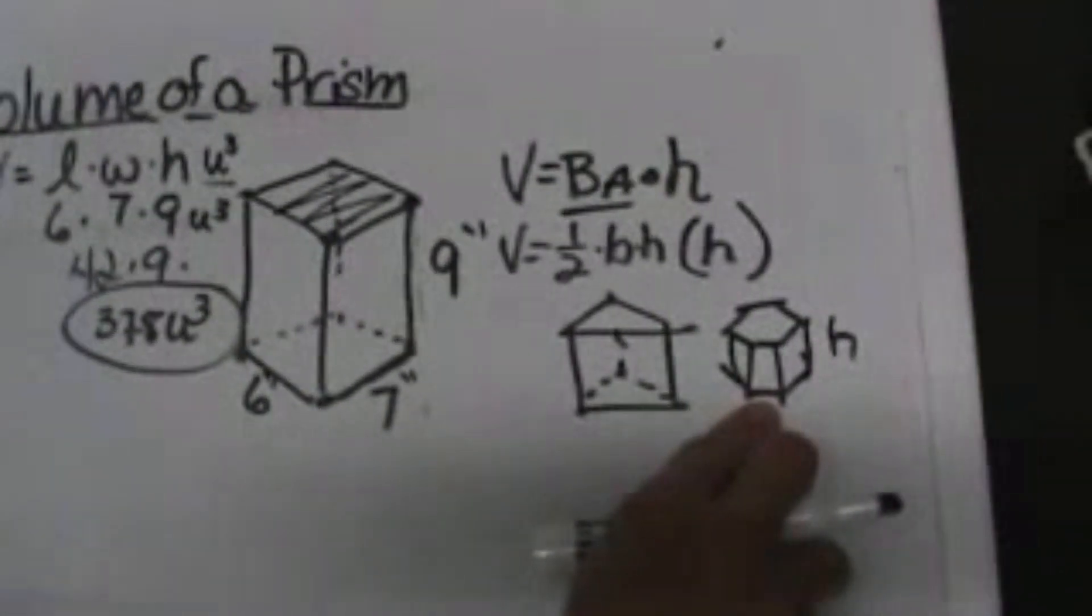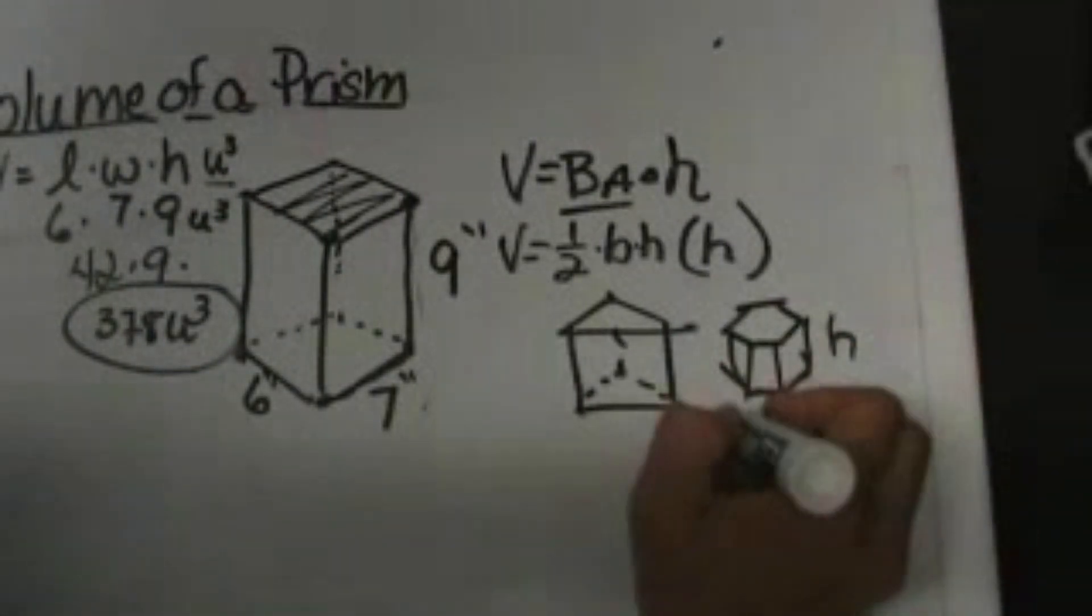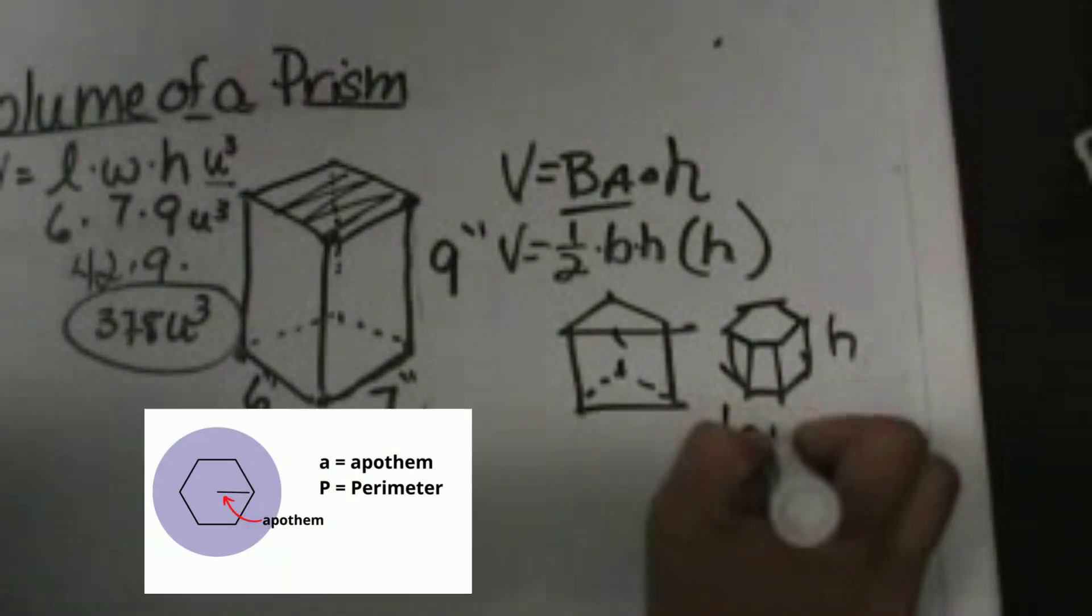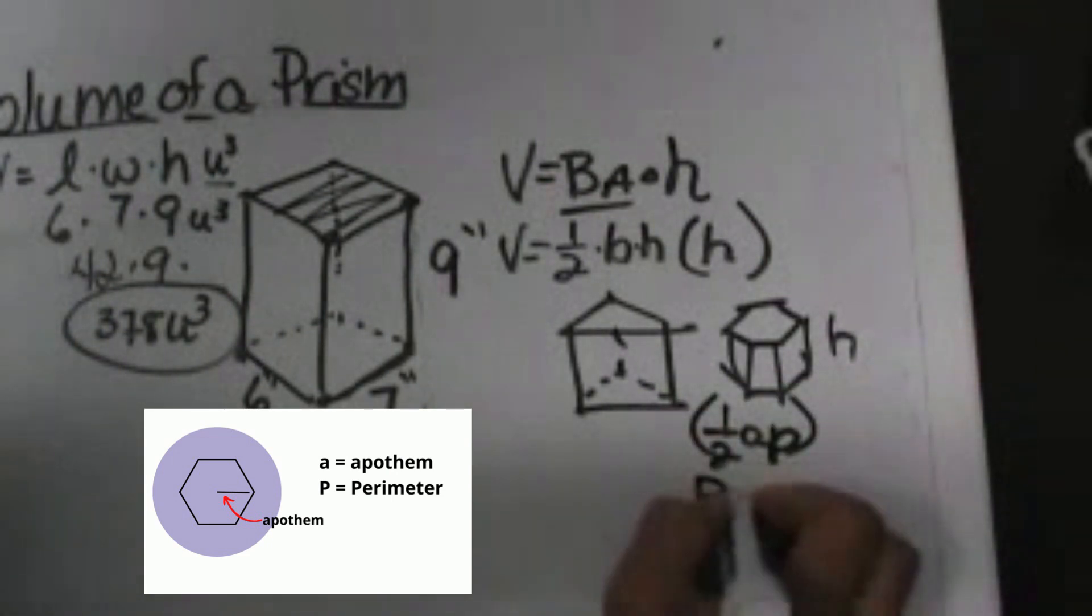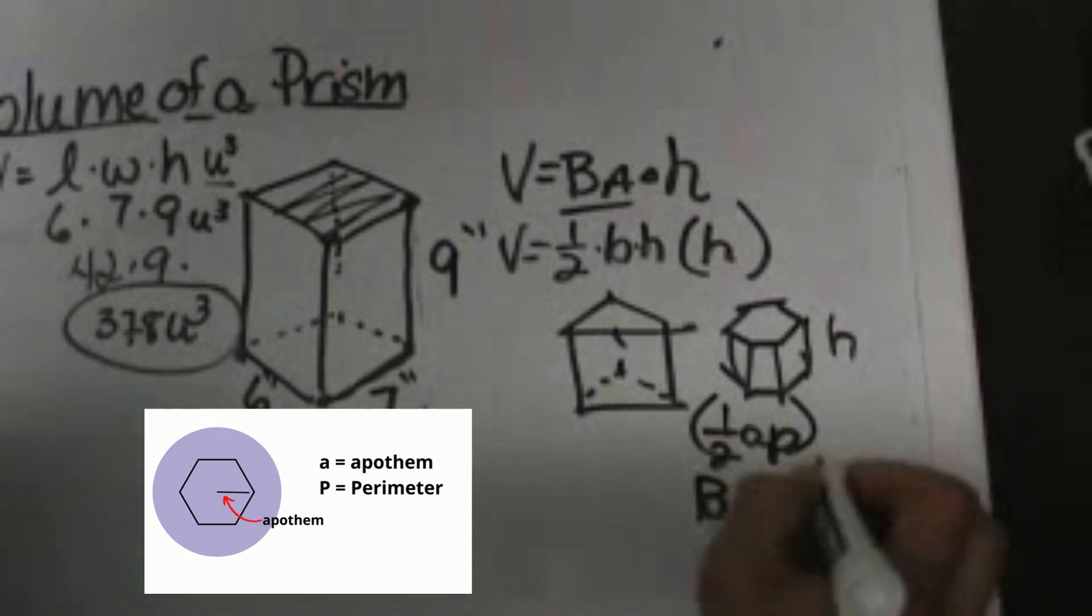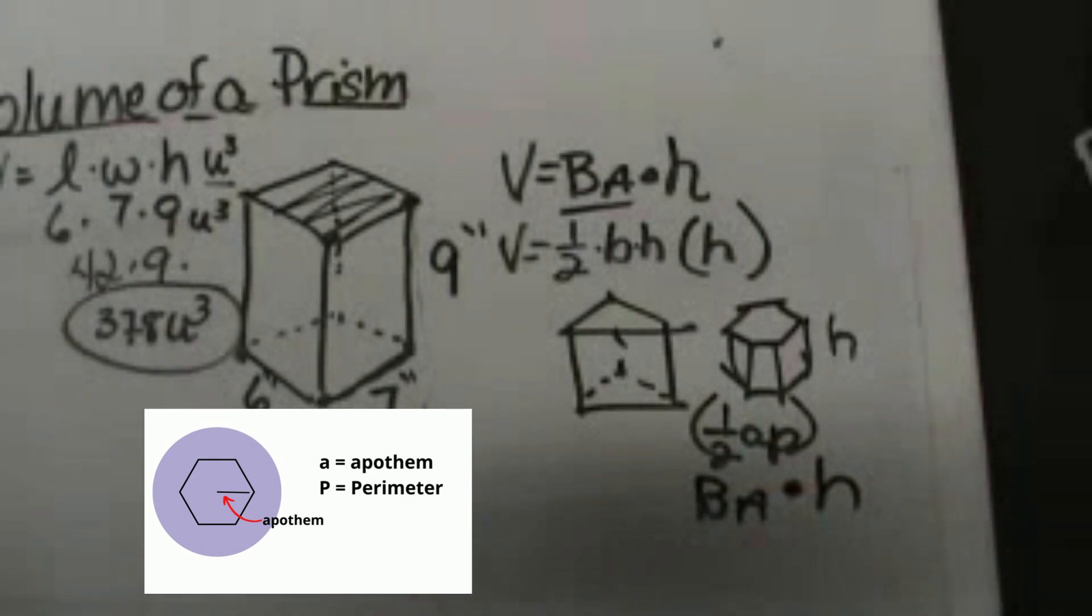Now what's the formula for the area of any regular polygon? It's one-half a·p. So you can use the one-half a·p formula for your base area and then just multiply that times the height to find the volume.